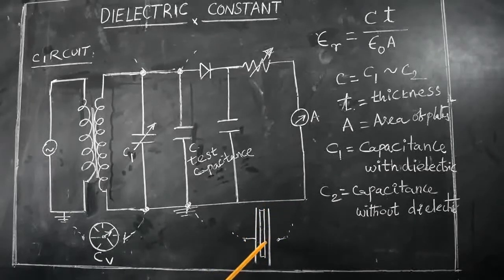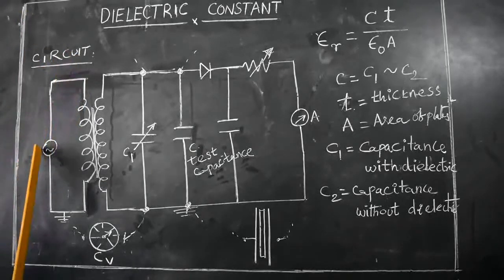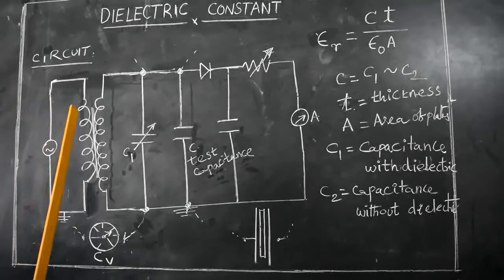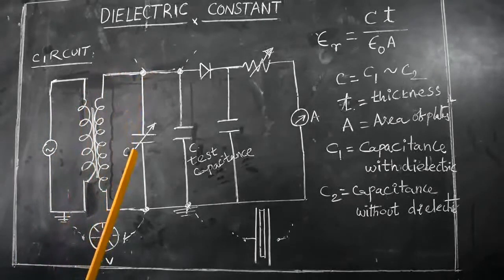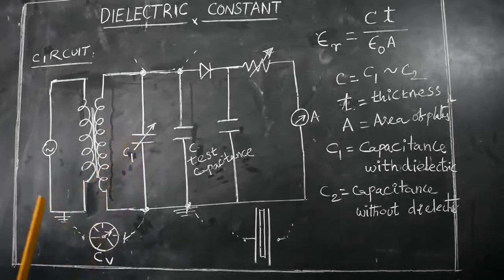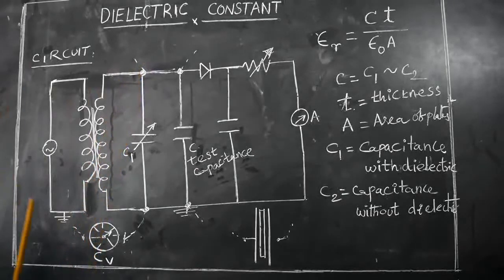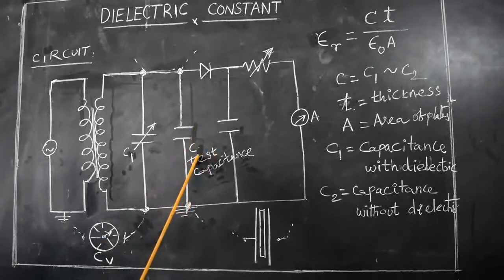The dielectric constant of this material is measured from a resonant circuit, as shown here. The resonant circuit contains an RFO generator or AC frequency generator connected to the primary coil of a transformer. The secondary coil of the transformer is connected to C1, called variable capacitance, whose value can be varied in steps. We also have a parallel capacitance C, called the test capacitance.